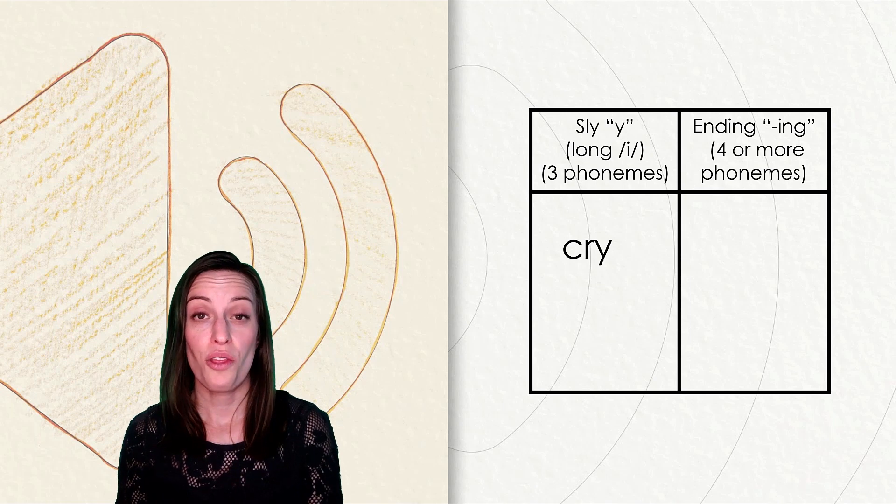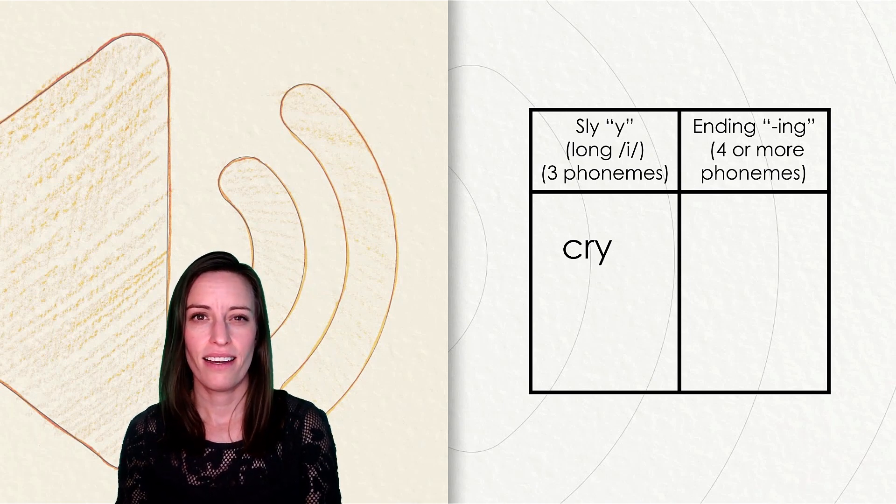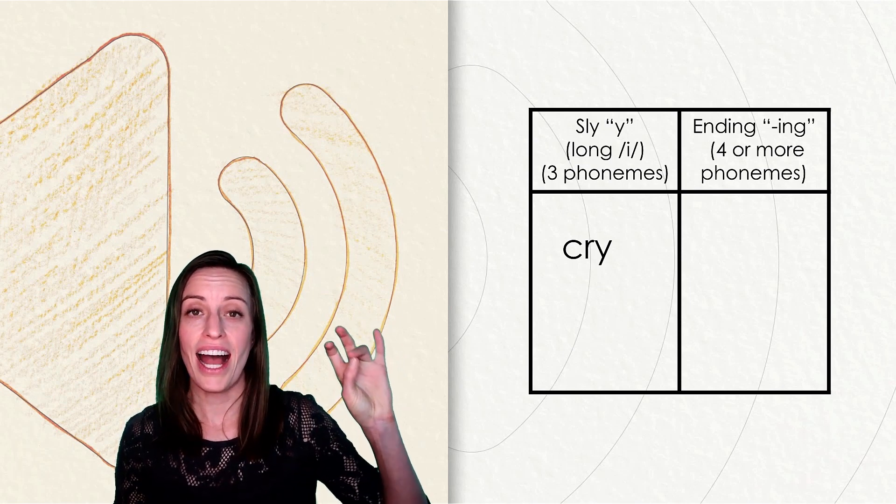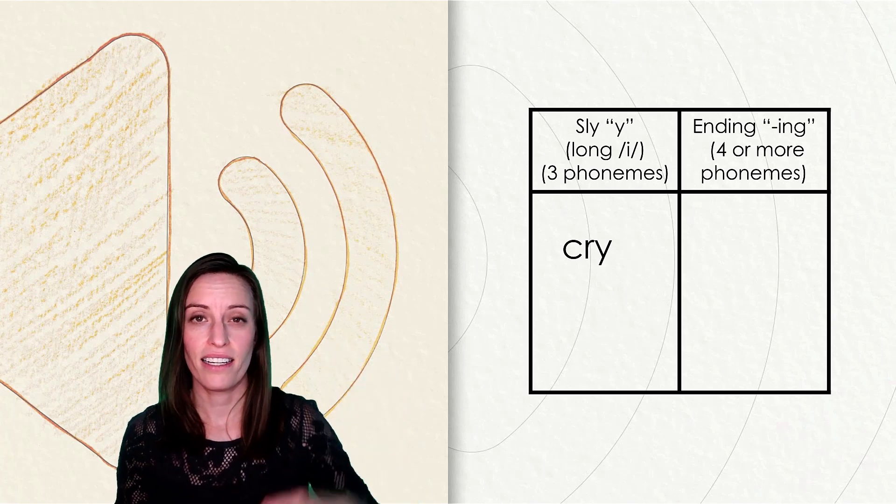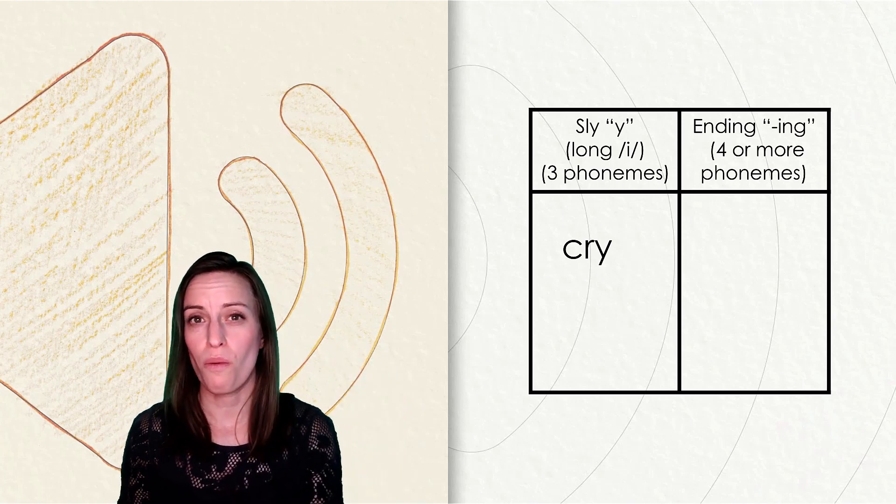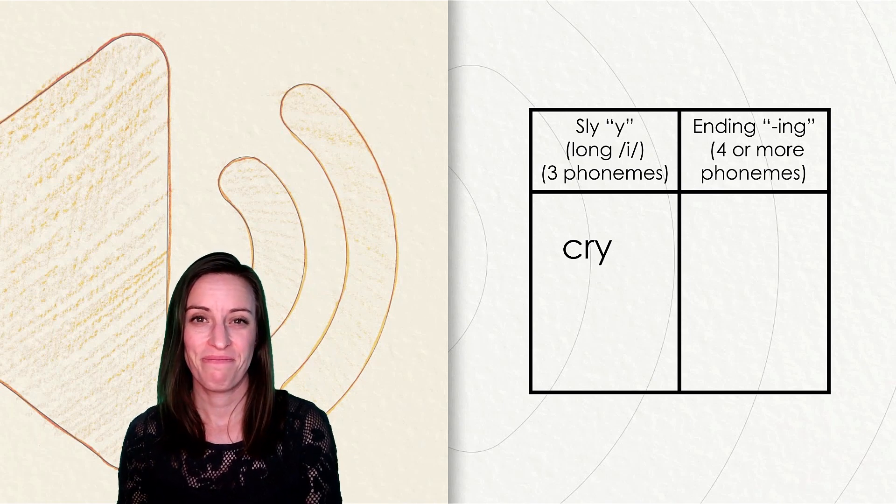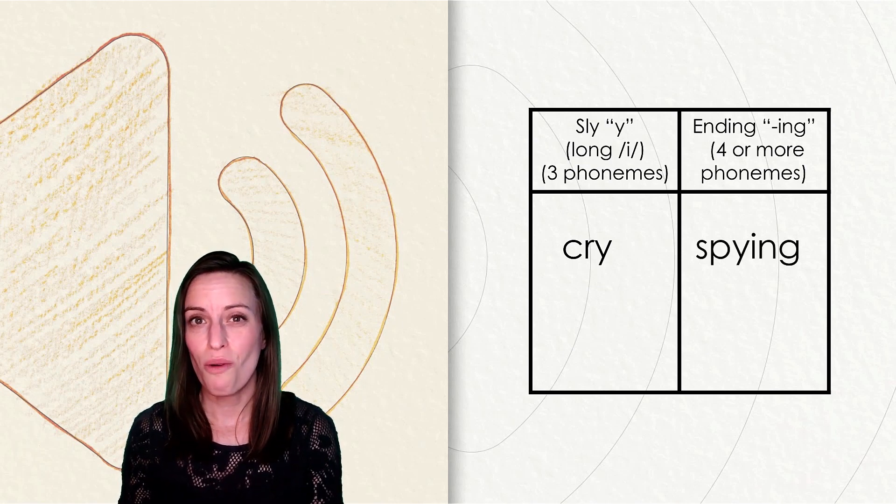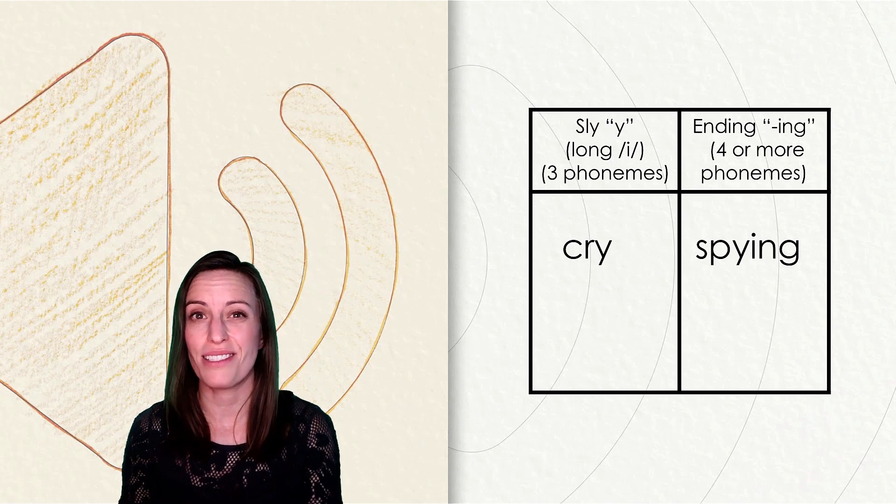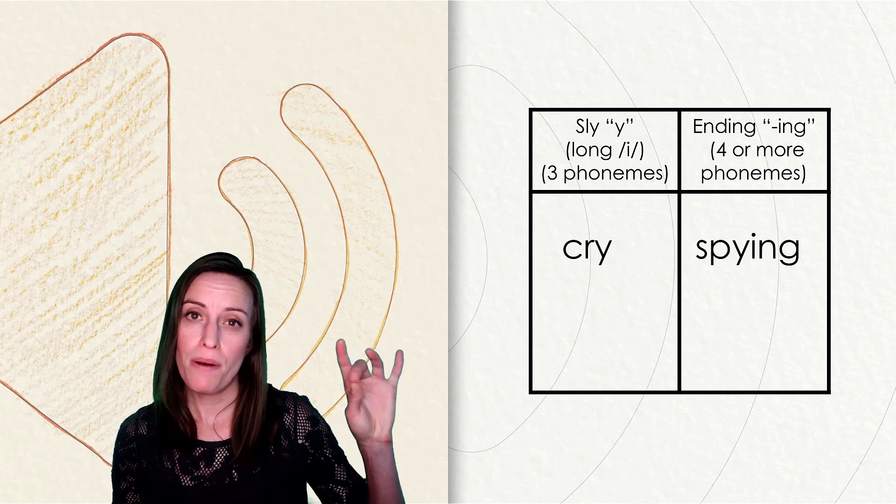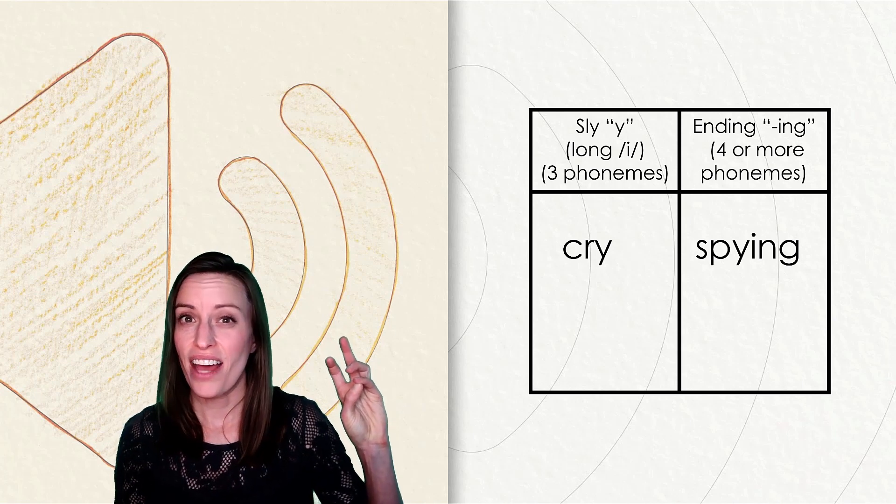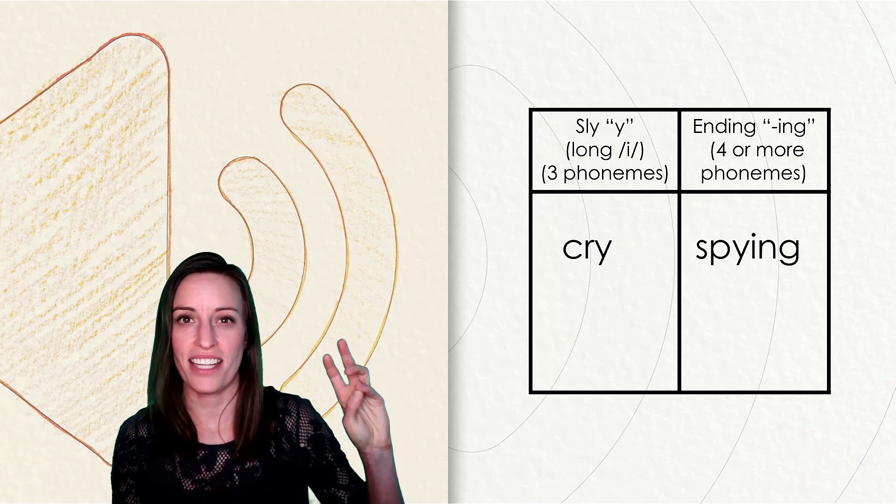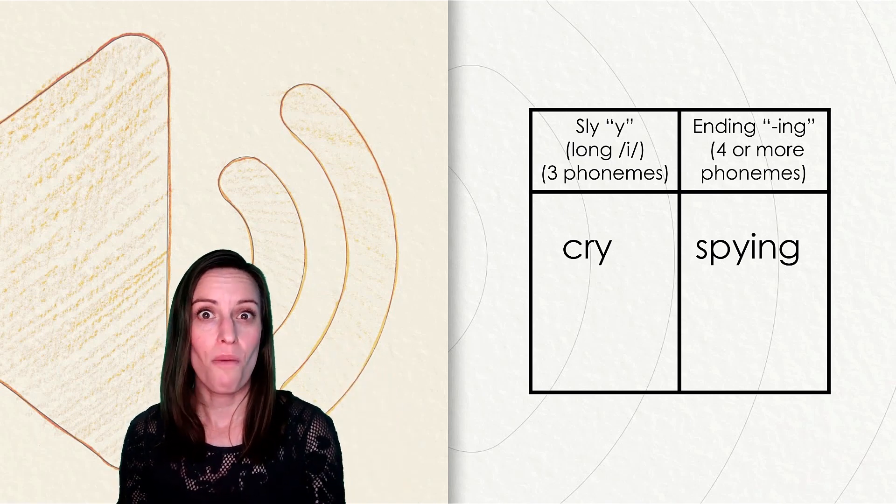All right. It's your turn. The word is spying. Let's tap it out. S-p-i-ing. Spying. Which column do you think the word spying belongs in? That's right. The word spying has four sounds or phonemes. S-p-i-ing. That last sound, ing, is made by the ing that work together as a unit.